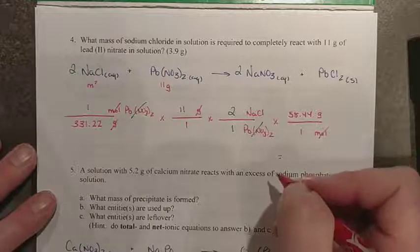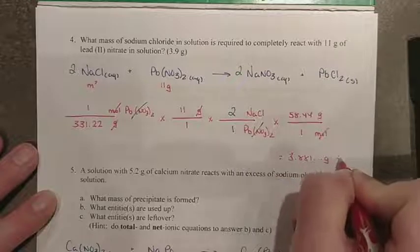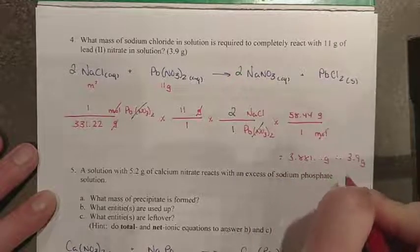Moles now go, and you're left with grams of NaCl. When you get your calculator answer, you get 3.881, and so therefore, in two digits, that would be 3.9 grams.